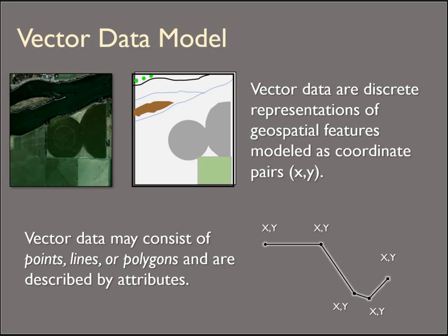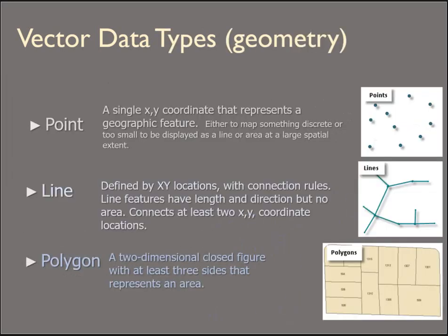As I said in part one, vector data is defined by specific x-y coordinate locations. In ArcGIS, vector data are often referred to as feature classes or shapefiles, and we describe the different types of feature classes as geometry. It's a discrete representation modeled as x-y coordinate pairs marking specific locations and nothing else around them — just in contrast to rasters as a little preview.